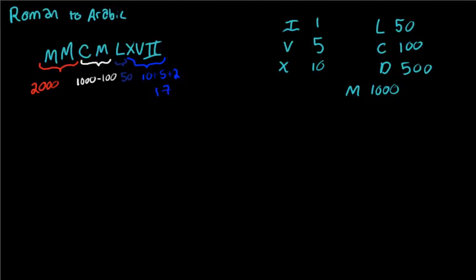We need to add that to 50. So 17 plus 50. We also need to add 1000 minus 100, which is 900. And we also have 2000, so plus 2000.